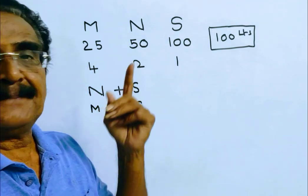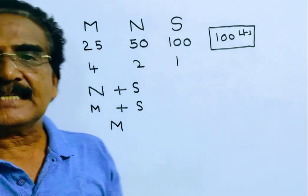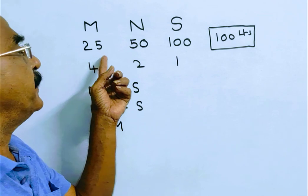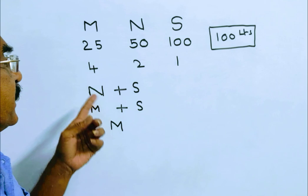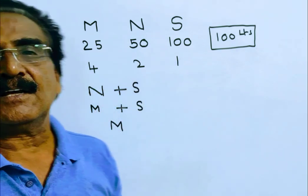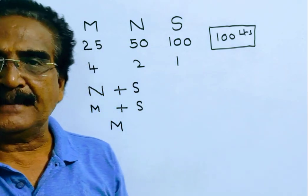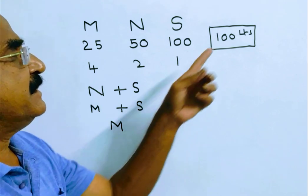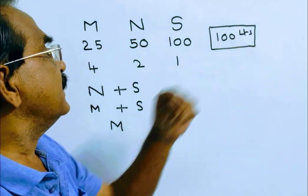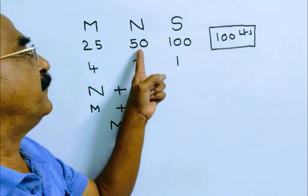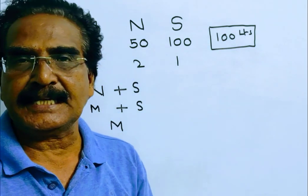Pipes M, N and S can fill a tank in 25 minutes, 50 minutes and 100 minutes respectively. Let's say the capacity of the tank is 100 liters, that is the LCM of 25, 50 and 100, so 100 liters capacity.